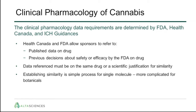The clinical pharmacology of cannabis has data requirements determined by the FDA, Health Canada, and ICH. Health Canada and FDA allow sponsors to refer to published data on drugs, and there is an abundance of literature on cannabis evaluation. Previous decisions about safety or efficacy are also considered. Data can be referenced on the same drug or with a scientific justification for similarity. Establishing similarity is straightforward for single molecules but more complicated for botanicals, because botanicals have multiple active components — potentially several hundreds of different chemicals that contribute to different effects.